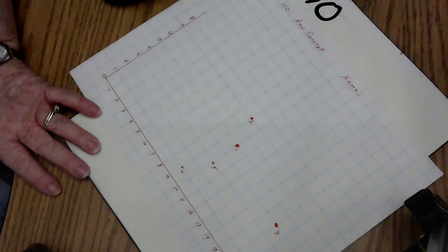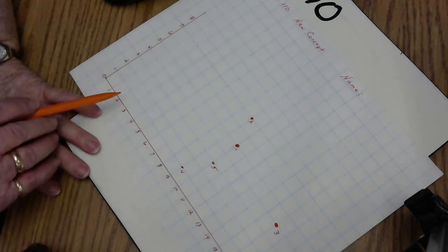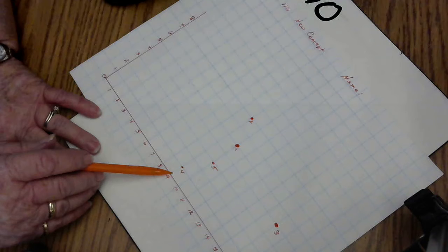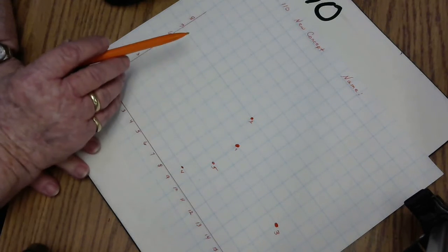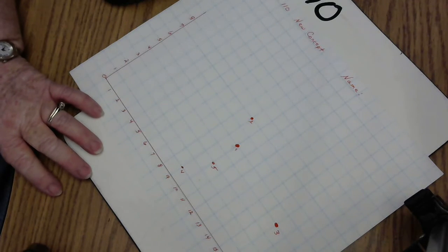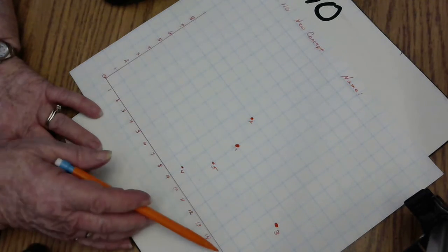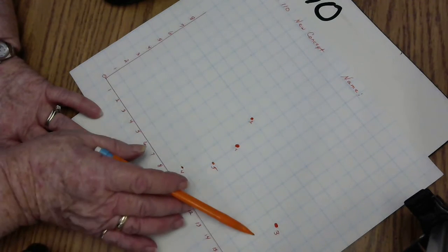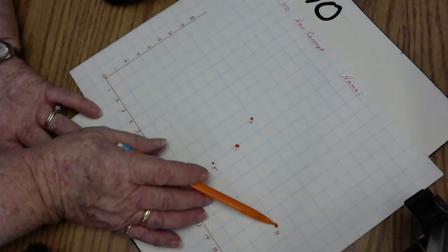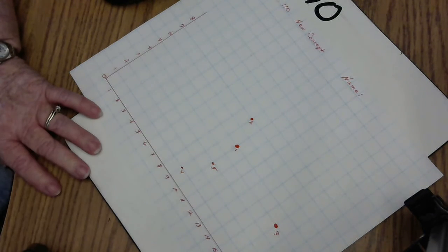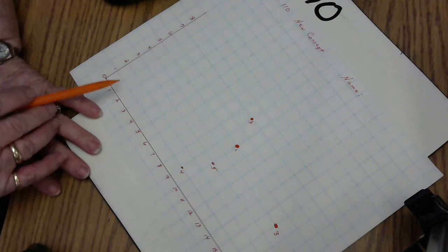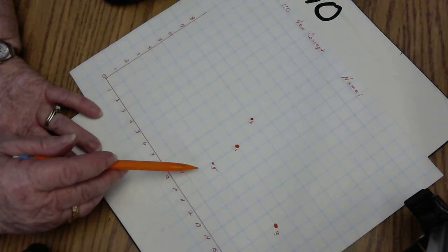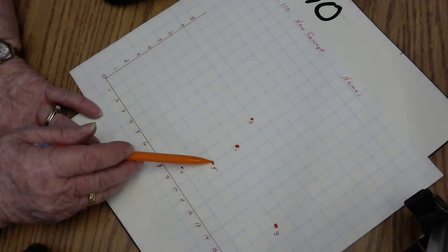Number 2 says (9,7), so I went over 9, went up 7, and put a dot and labeled it 2. Number 3 says (16,4). Whoa, so I went clear over to 16 and then up 4 places and made a dot, and I have number 3. If you look at number 5, it says (10,3). So I went over 10, up 3 places and made a dot. That's number 5.